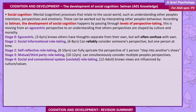Stage 0: Egocentric, 3–6 years — notes others have thoughts separate from their own but will often confuse them with their own. Stage 1: Social informational role taking, 6–8 years — can reliably consider someone's perspective, but one person at a time. Stage 2: Self-reflective role taking, 8–10 years — can fully appreciate the perspective of one person; step into another's shoes. Stage 3: Mutual third-party role taking, 10–12 years — can simultaneously consider multiple people's perspectives. Stage 4: Social and conventional system, societal role taking, 12 to adult — those views are influenced by culture and values.